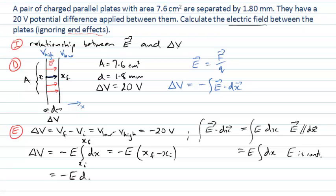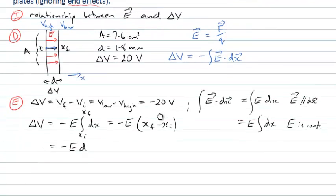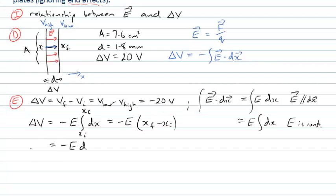And you might have already recalled that for a uniform electric field, the potential difference is simply the electric field multiplied by how far you've moved parallel to that field. So making a bit more space here, we can now rearrange this. The electric field is what we're looking for.